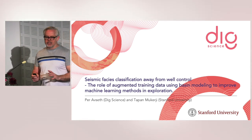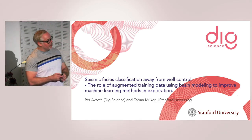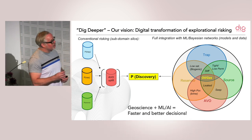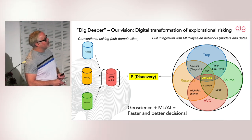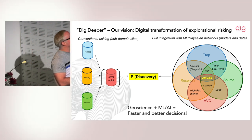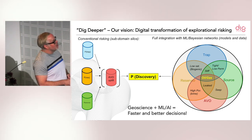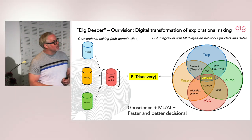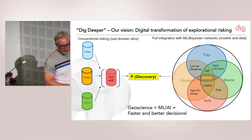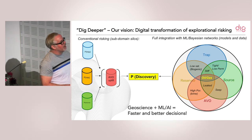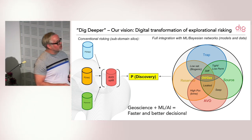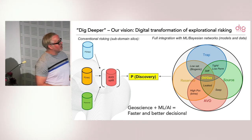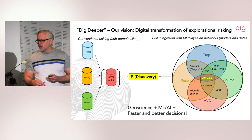We are an exploration team and we work with risking. Traditionally, we have been working in silos — basin modeling works with source migration, geologists work on sedimentology and stratigraphy, the interpreter works on the trap, and AVO analysis is done at the end. The new model is to hook up with people who are very good at machine learning, and use that as a tool to integrate our fields jointly — whether in a Bayesian setting or with other machine learning algorithms — to do it faster and with better decisions.